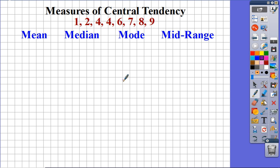Today we're going to talk about measures of central tendency. We have our data set: 1, 2, 4, 4, 6, 7, 8, and 9. We're going to go back to our good old friends mean, median, and mode and learn a couple of new things as well. Measures of central tendency—central meaning middle, tendency meaning trend—we're looking for the middle trend, what's going on in the middle.